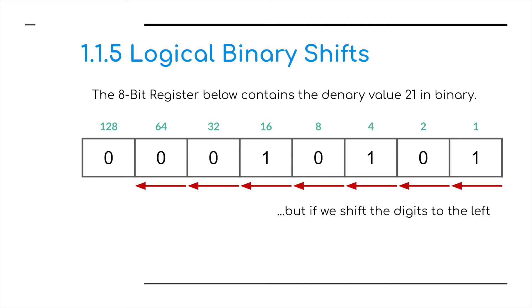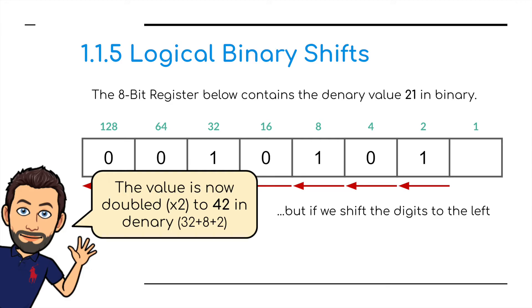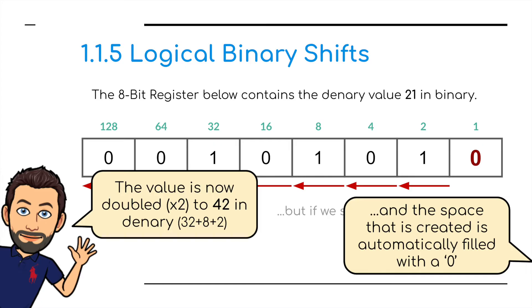We have an 8-bit register containing the binary number 21 — that's 1 lot of 16, 1 lot of 4, and 1 lot of 1. If we shift these digits one space to the left, we get 1 lot of 32, 1 lot of 8, and 1 lot of 2. That's 42, which is twice the value of 21 — so 21 times 2 equals 42. When shifting, we automatically put a 0 into the empty end column.